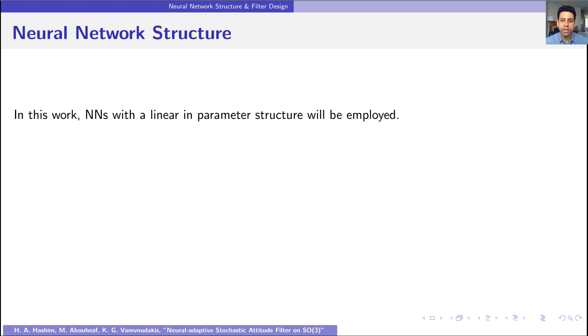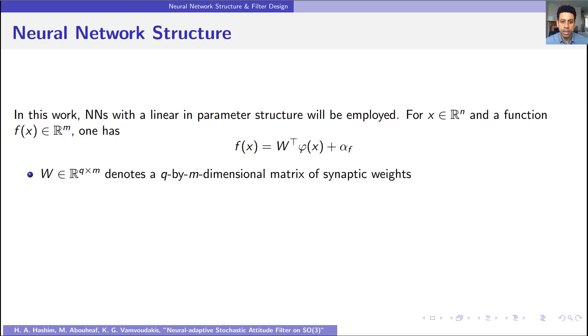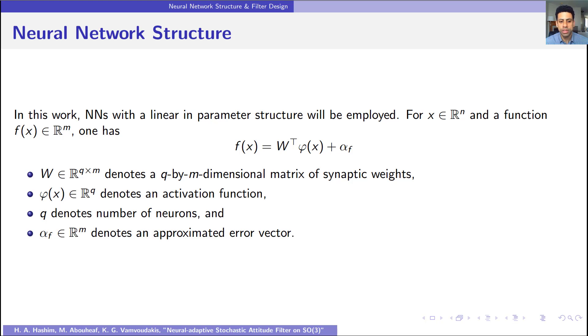In this work, the neural network structure is considered to be a linear in parameter structure. For the following function F of X equal W transpose phi X plus alpha F, this is the neural network structure that we consider, where W denotes a Q by M dimensional matrix of weights, and phi of X denotes activation functions. Q denotes number of neurons, and alpha F denotes approximated error vector.